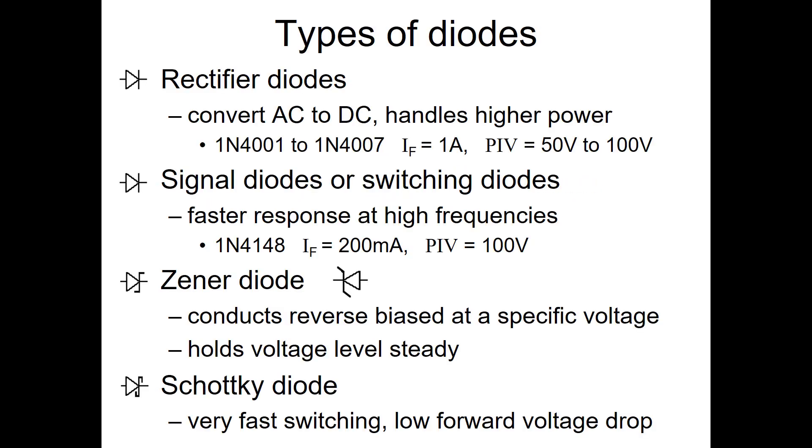There are several different types of diodes. Rectifier diodes are used to convert AC to DC. They typically handle higher power. They typically have what's called a forward current of, say, one amp, so they can handle a fairly high current. PIV stands for peak inverse voltage, and that's the voltage at which they break down and start conducting in a reverse biased mode. But the peak inverse voltage can be fairly high, up to, you know, 100 volts, before they'll start conducting backwards, in other words, before they break.